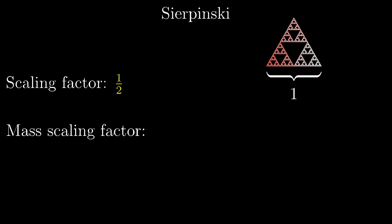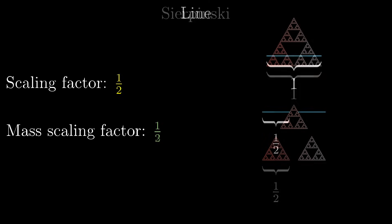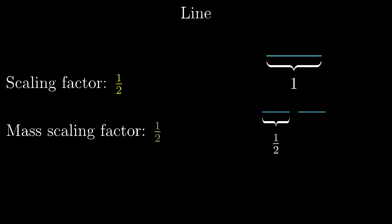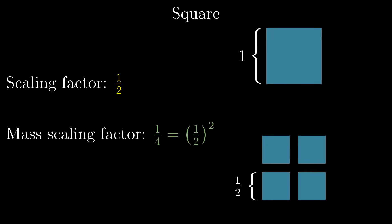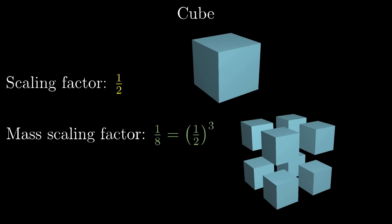And when you scale down this Sierpinski triangle by a factor of a half, wouldn't you agree that it makes sense to say that its mass goes down by a factor of one-third? I mean, it takes exactly three of those smaller ones to form the original. But notice that for the line, the square, and the cube, the factor by which the mass changed is this nice clean integer power of one-half. In fact, that exponent is the dimension of each shape.